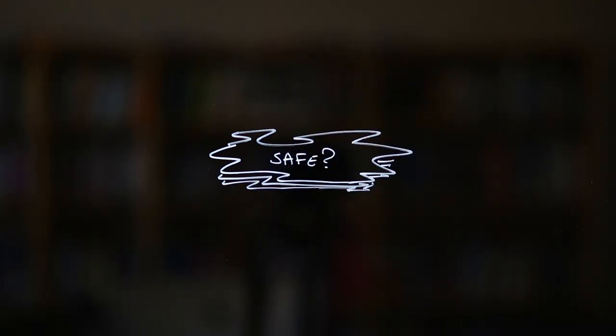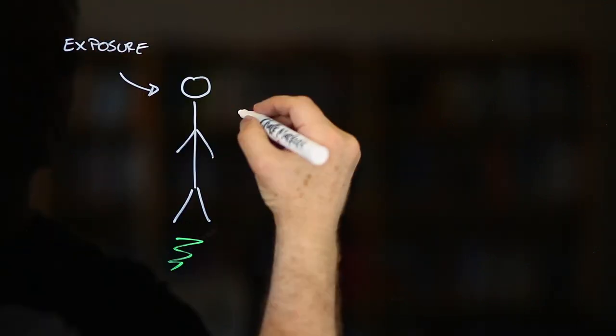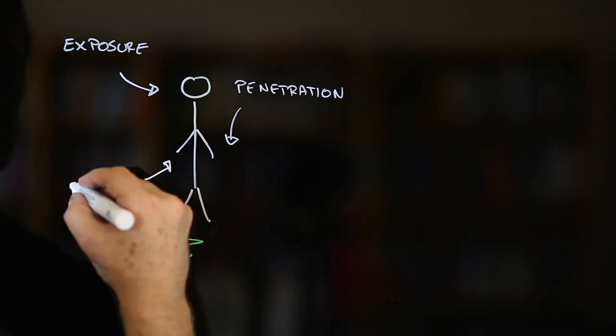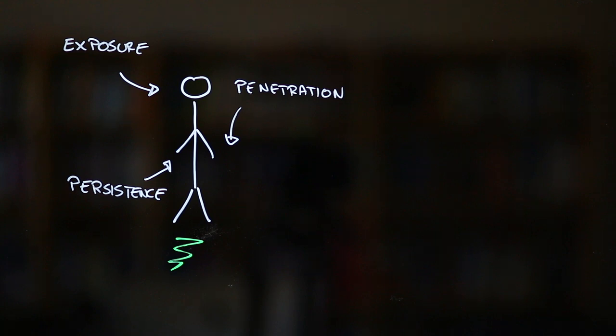However, we do know that if graphene-containing particles are able to get into your body, if they're small enough to get to places where it's easy to cause a lot of damage into your lungs for instance or into your cells, and if they stick around once there, some forms of it could cause harm.